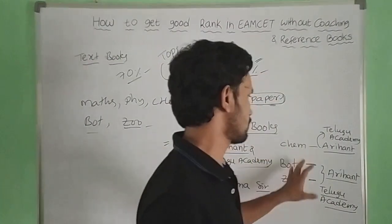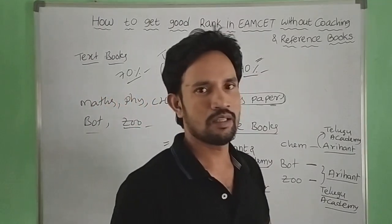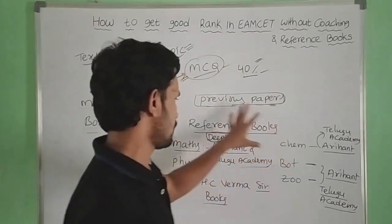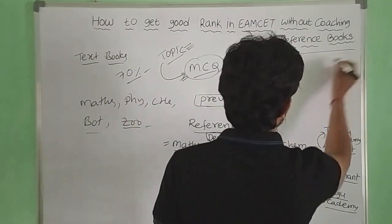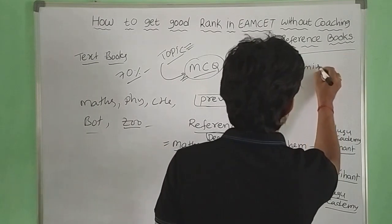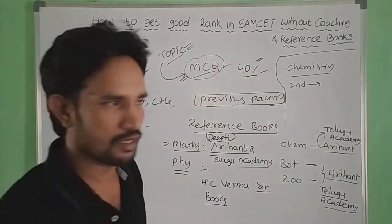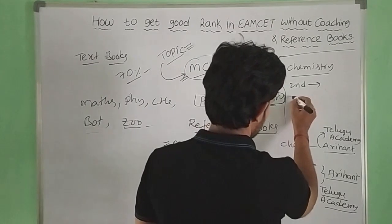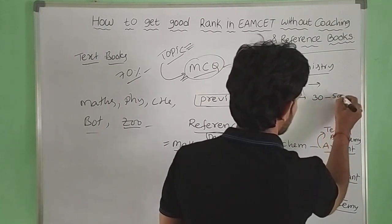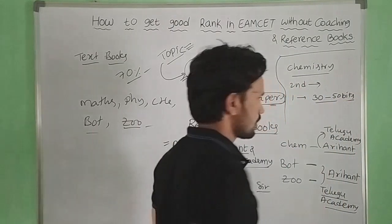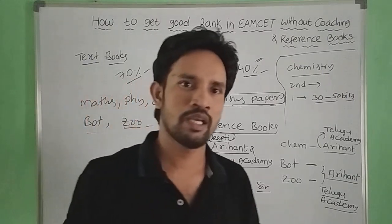Botany and Zoology is the best textbook — refer to it 3 or 4 times. You can refer to this textbook for Physics and Chemistry, and for Maths as well. In Chemistry, it is 2nd year at about 5%. You can prepare for it in PDF. Minimum 30 to 50 bits, prepared based on previous papers and different models.